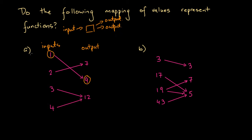So let's consider whether mapping A is a function. If we put 1 into this little machine, we get out 9 — a single input and a single output. So far this could be a function. Looking at our second input, 2: if we input 2 we get 7. Again, one input and a single output.